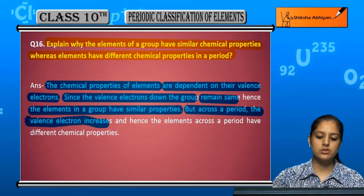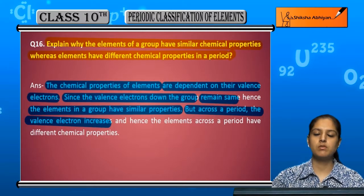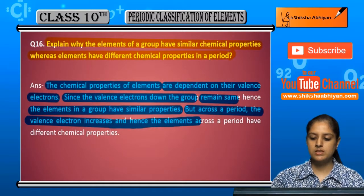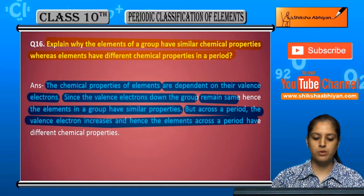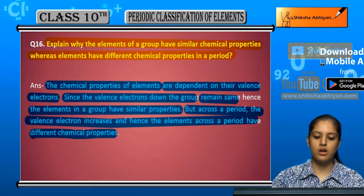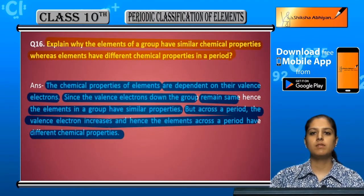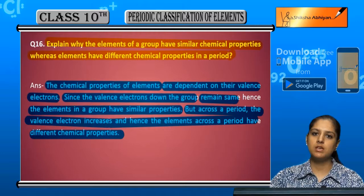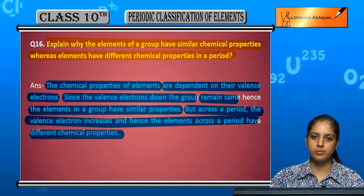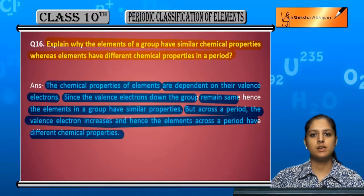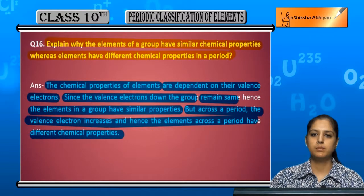In groups, where the valence electrons are the same, the properties are the same. In periods, where the valence electrons are different, the properties are different.